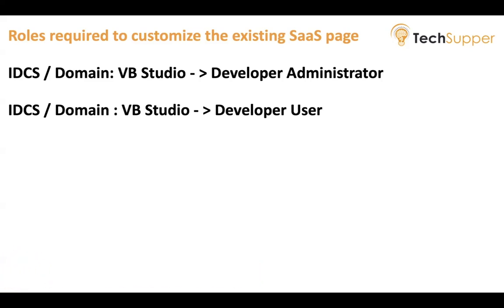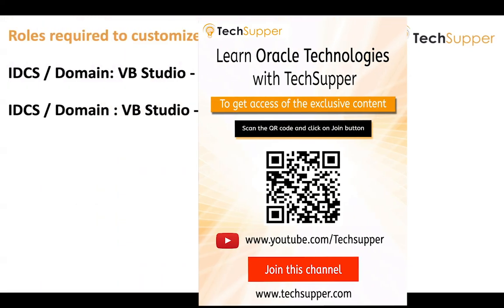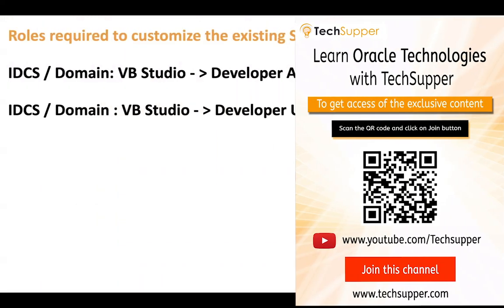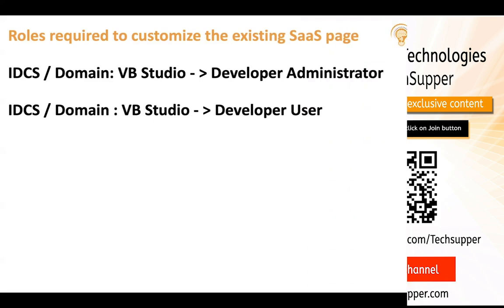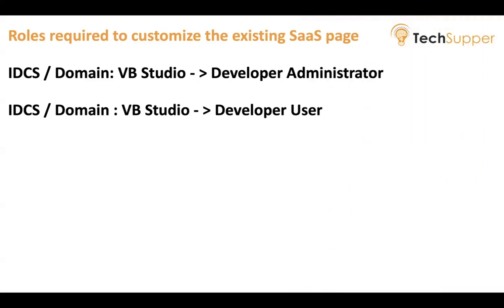If you give anybody the role called Developer Administrator, they will become the administrator of VB Studio and they can do anything. If you give Developer User to anybody, they will become a developer but they will have restricted privileges. When you provision SaaS, it comes with VB Studio by default, and when VB Studio is provisioned inside SaaS those two roles will be created by default.